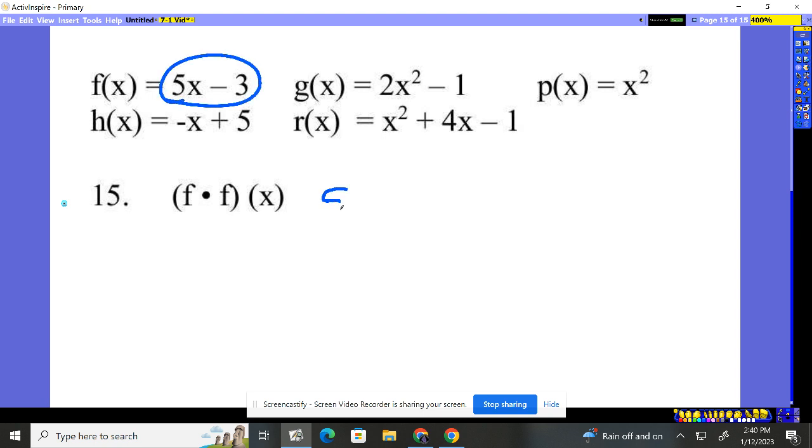The f function, 5x minus 3, times itself, 5x minus 3. Okay, just a binomial times a binomial.